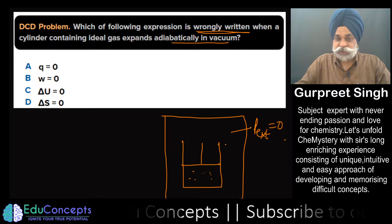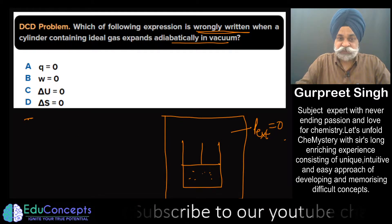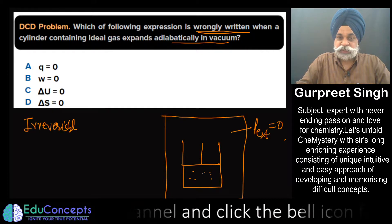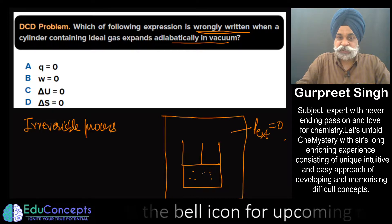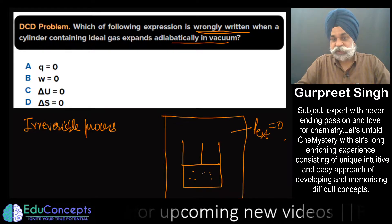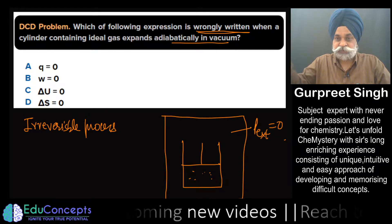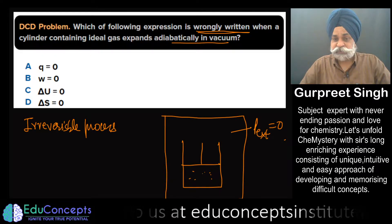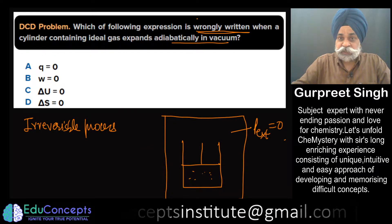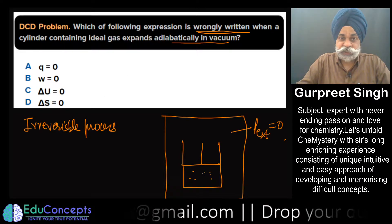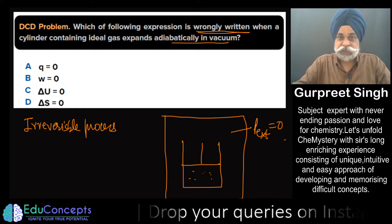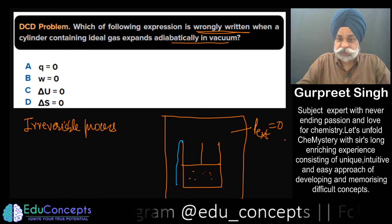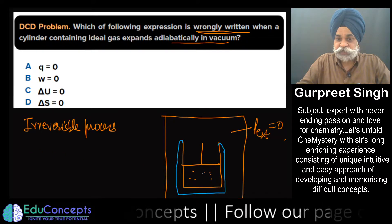Vacuum means that the P_external here is zero. If P_external is zero, this is a sort of irreversible process which occurs of its own. You cannot reverse it — if you have a container with a gas put into vacuum and the piston is movable, the volume is going to expand. The question is what is being asked as per the options.